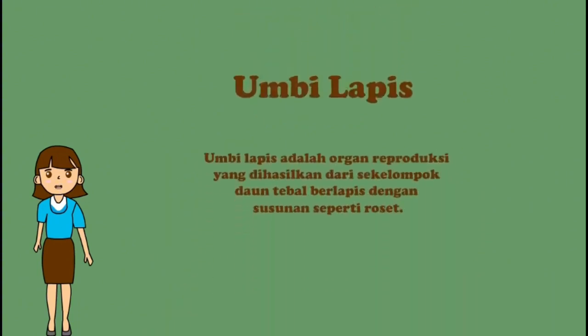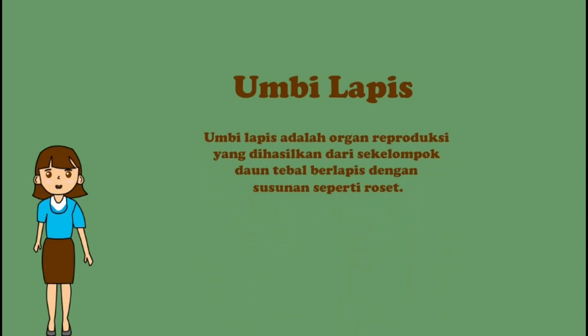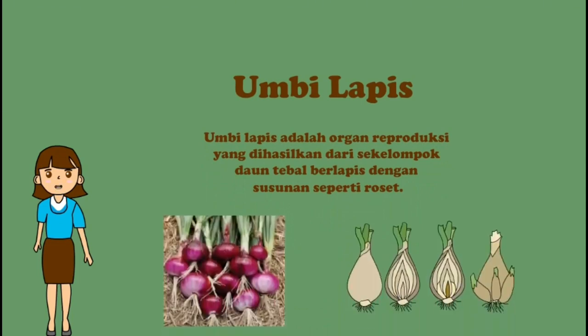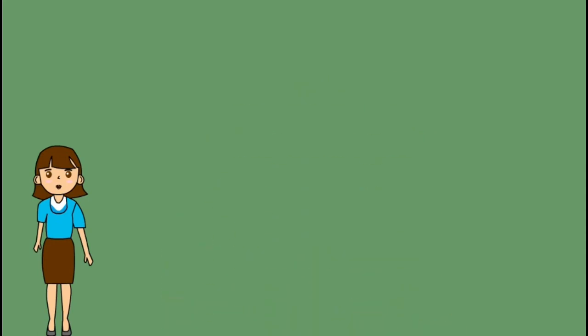Yang keempat, umbi lapis. Umbi lapis adalah organ reproduksi yang dihasilkan dari sekelompok daun tebal berlapis dengan susunan seperti roset. Contoh tanaman yang menggunakan umbi lapis untuk pemibitan antara lain bawang merah, bawang putih, bawang bombay, bunga bakung, bunga tulip, bunga lili hujan, bunga amarilis, dan bunga narsis.